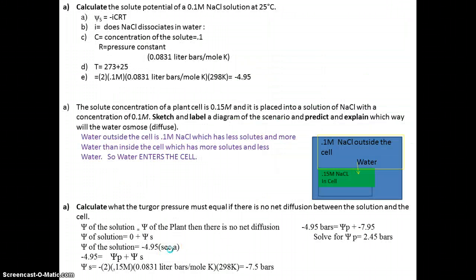Here is a problem we did in class. Calculate the solute potential of a 0.1 molar NaCl solution at 25 degrees. When you see the word solute potential, you know you have to use this formula. In this case, I is 2 because when sodium chloride is placed in water, it dissociates into sodium and chloride.